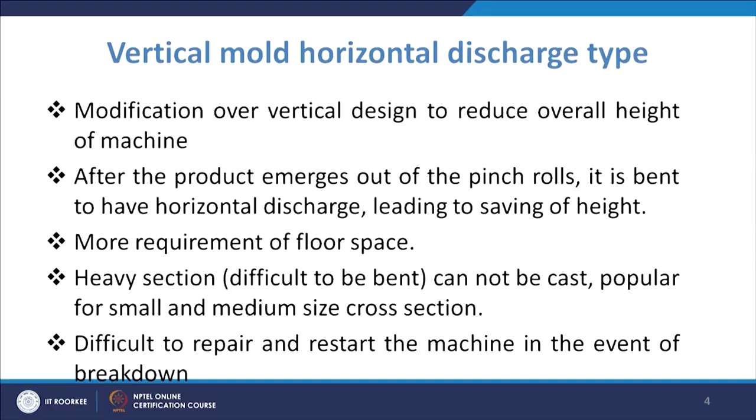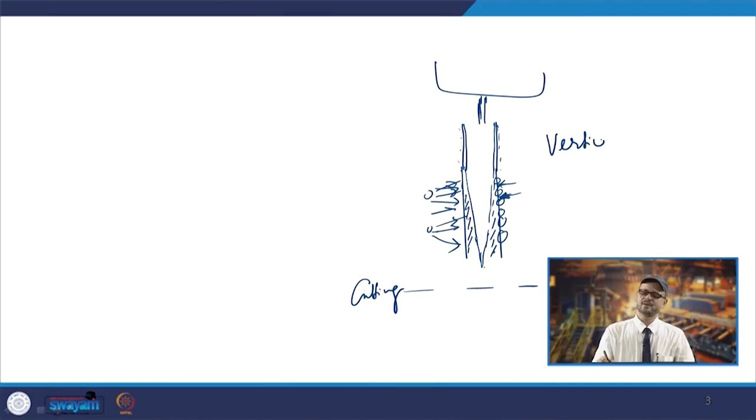When handling is an issue or we want to reduce height, we go for a modification where, when the product emerges out of the pinch rolls, it is bent to have horizontal discharge — leading to a saving of height. In the vertical type it is all completely vertical, whereas in the vertical-mould-horizontal-discharge type, the mould will be vertical and then you will have rollers, and after that you have pinch rollers.